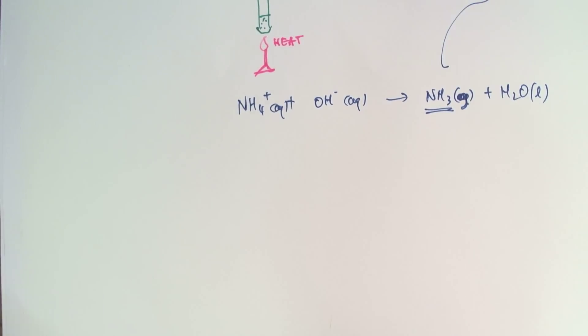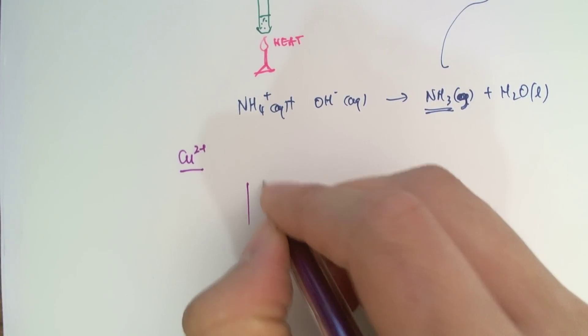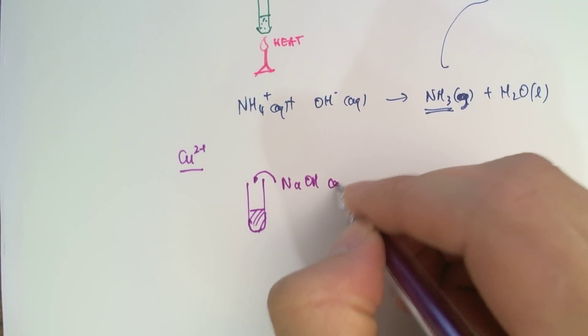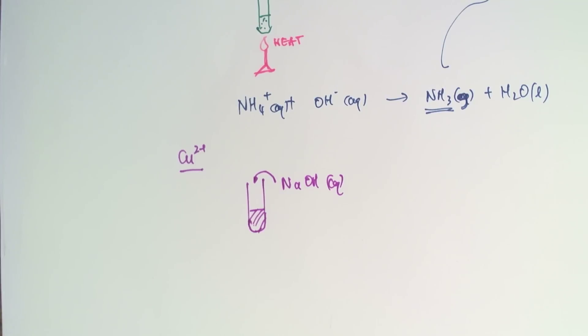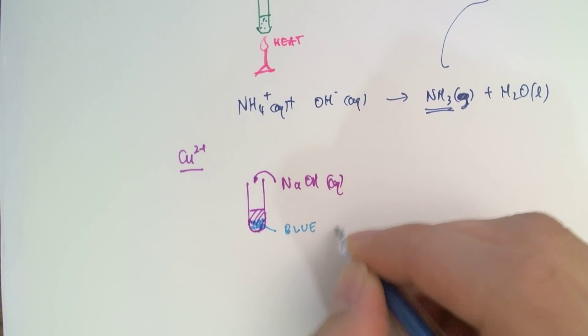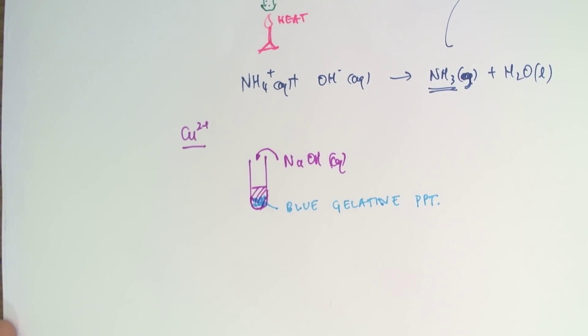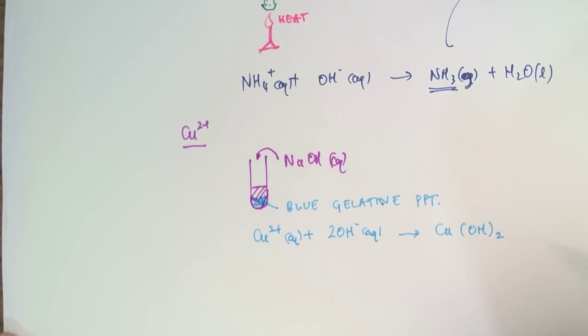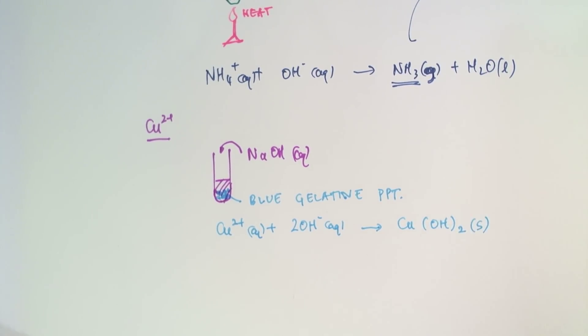Let's look at the next one. And the next one we're going to look at is copper. So what you'll do is, again, you take your solution suspected of containing copper 2+, and you add some sodium hydroxide, the strong alkali sodium hydroxide. Now, what you'll see is you'll see a blue gelatinous precipitate forming on the inside. So we have a blue gelatinous precipitate. And that indicates the presence of copper 2+. The aqueous copper ions will react with two aqueous hydroxide ions to form the Cu(OH)2 hydroxide complex, which happens to be solid.